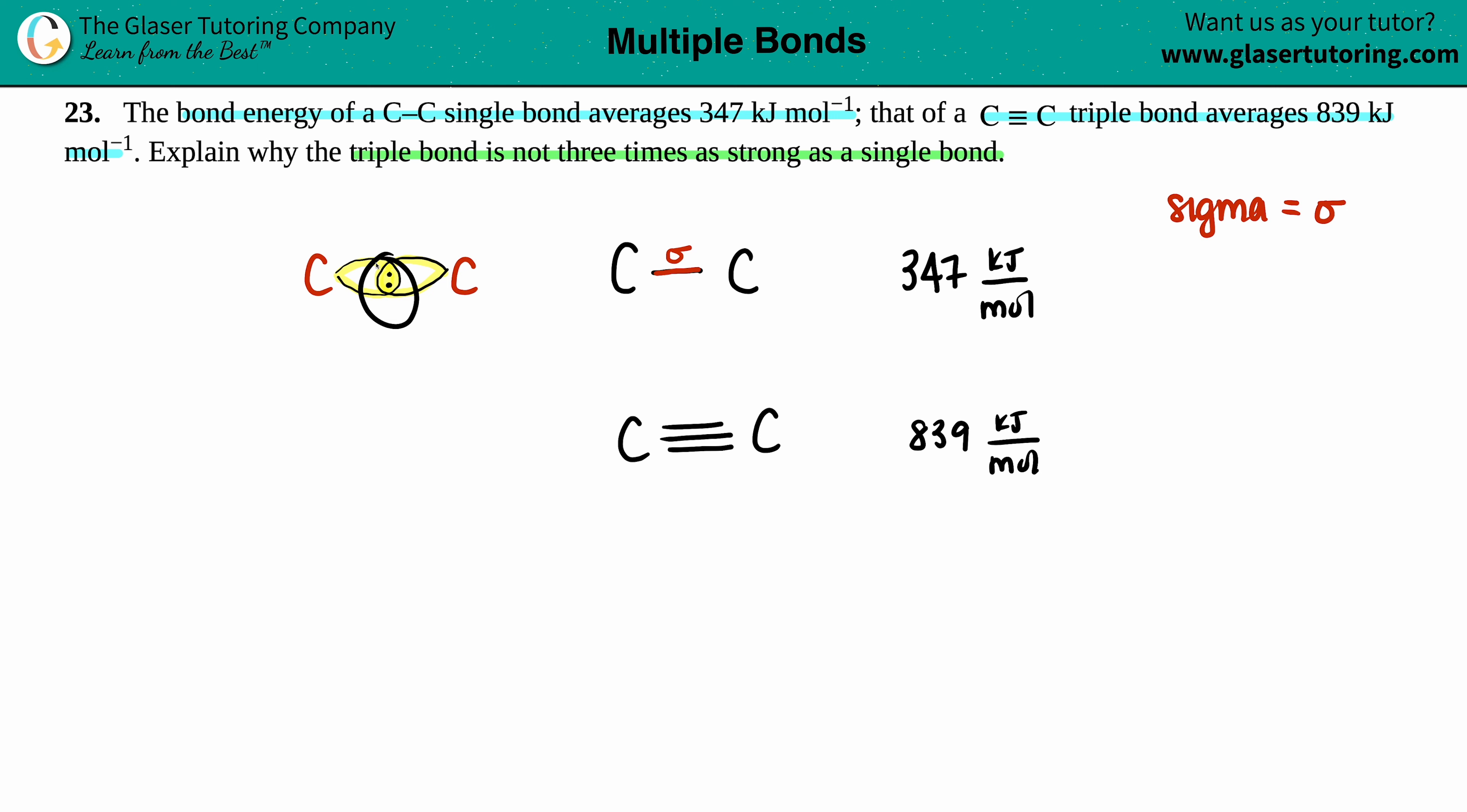And that's where your two electrons are going to go, one from carbon and the other one from carbon. And this makes a single bond, a.k.a. a sigma bond. But the sigma bond is always from nucleus to nucleus in a direct line. So it's pretty strong, 347 kilojoules per mole.